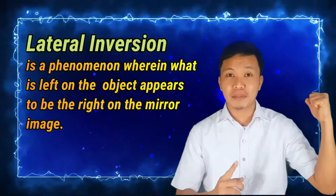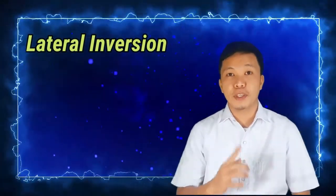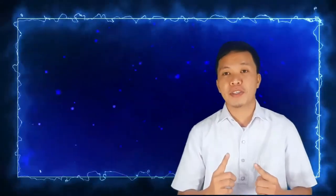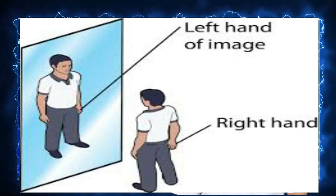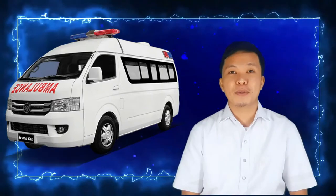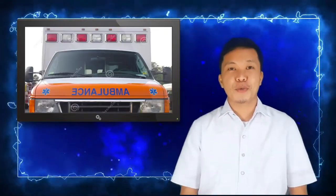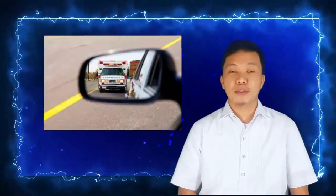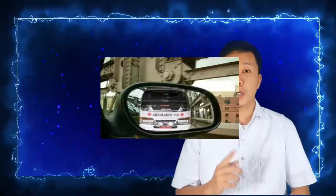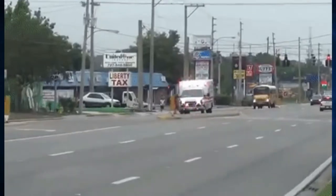Now speaking of laterally inverted, lateral inversion is a phenomenon wherein what is left on the object appears to be the right on the mirror image. This is due to the direction of the light followed when it strikes a reflecting surface like a mirror. So that is why when you are in front of a mirror, your left hand appears to be the right hand. Now, the common thing that we usually observe and we have seen during this pandemic time which is connected with lateral inversion is the ambulance. You can always see ambulances in the streets due to the COVID patients that are increasing. The word ambulance is written in a reverse manner so that the car in front of the ambulance can read easily the word on his mirror and so that he could give way for the ambulance to pass by.